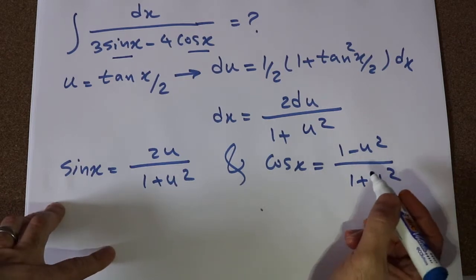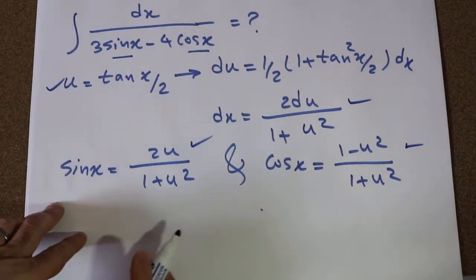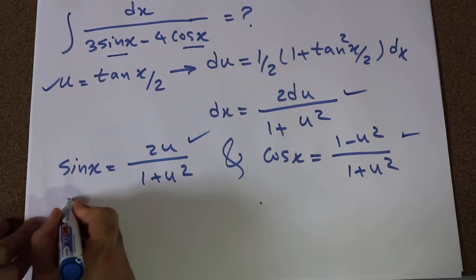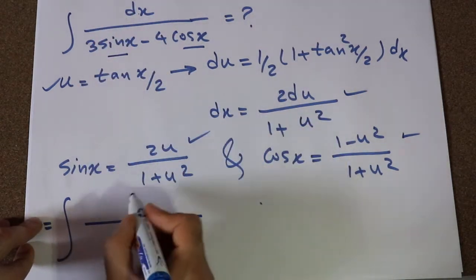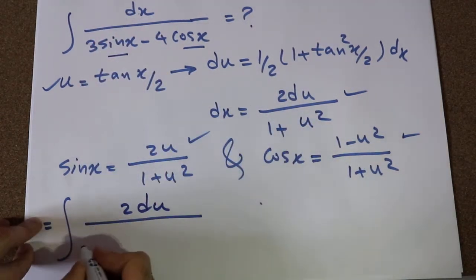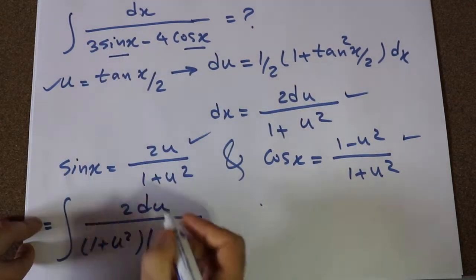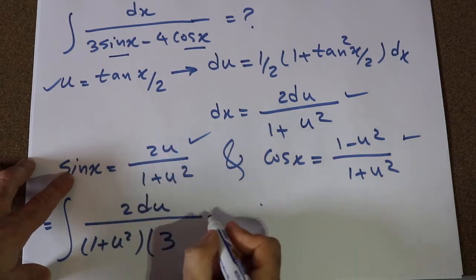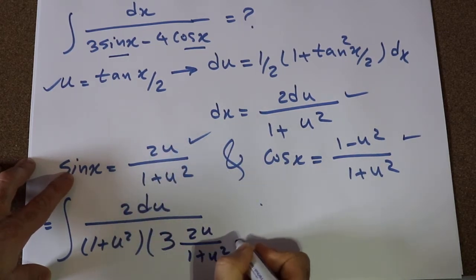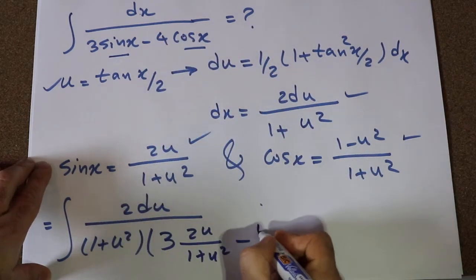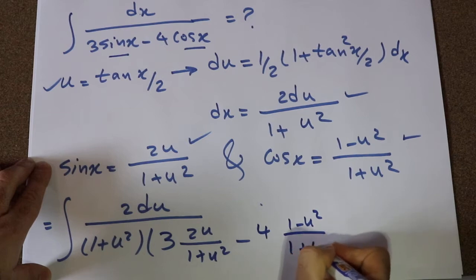Now all you need to do is substitute these expressions into the integral. You can rewrite this integral as the integral of 2du divided by 1 plus u², times 3 times 2u divided by 1 plus u², minus 4 cosine x, that is 4 times 1 minus u² divided by 1 plus u².